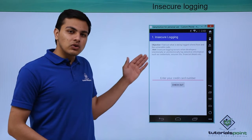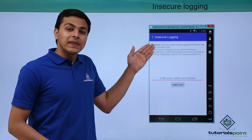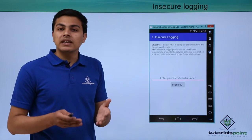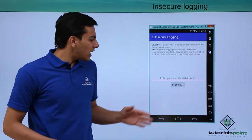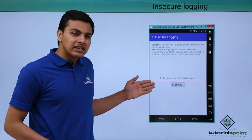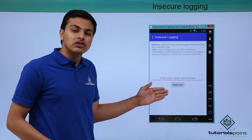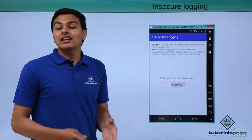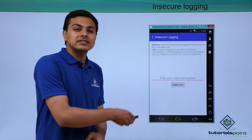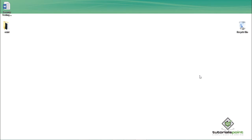This is how the first issue looks in the DIVA application — insecure logging. Our objective is to find out what is being logged by this application and to find the vulnerable code. The challenge asks us to enter a credit card number and click checkout to see what happens.